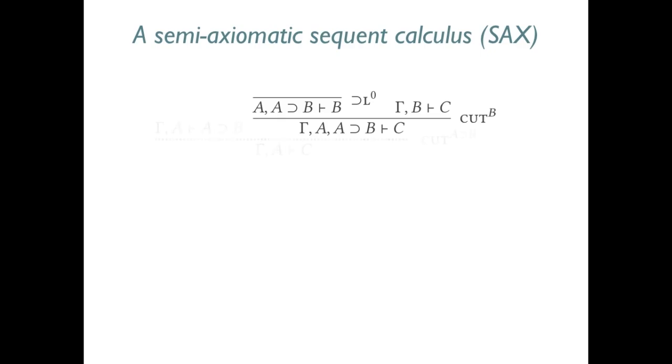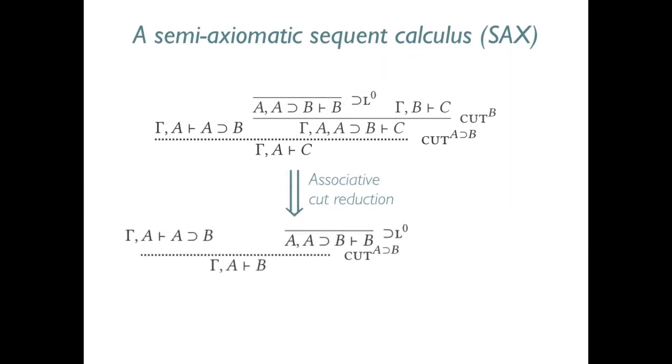In this case, we can reassociate the subderivations to form a cut normal proof. First, we cut gamma A turnstile A implies B against our new implication left axiom, appealing to the admissible cut principle to form a cut normal proof of gamma A turnstile B.